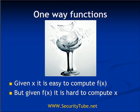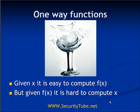Before going into details about public key cryptography, let's first see what a one-way function is, which is a building block for public key cryptography. In a one-way function, given x it is very easy to find f(x), but given f(x) it is very hard to recompute x. For example, given a plain text it is easy to compute the encrypted text, but given a cipher text it is very hard to find the plain text. A practical analogy: given a wine glass, it is easy to break it into small pieces, but given those broken pieces you cannot easily recreate the glass — it is computationally difficult.